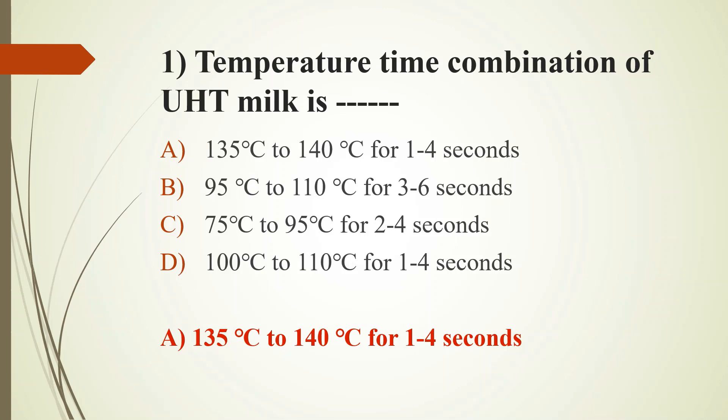UHT — Ultra Heat Temperature — thermized milk processing involves heating milk in a continuous process, cooling it rapidly, and aseptically packaging it into a sterile container. Ultra heat thermized milk contains less bacteria.